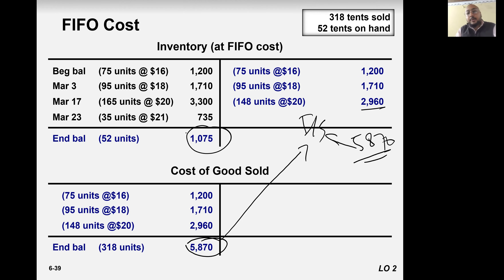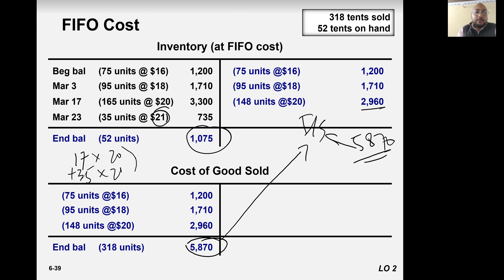The remaining items: 165 minus 148 equals 17, plus 35 equals 52. So 17 would be recorded at 20 while 35 would be recorded at 21, giving us 1075.